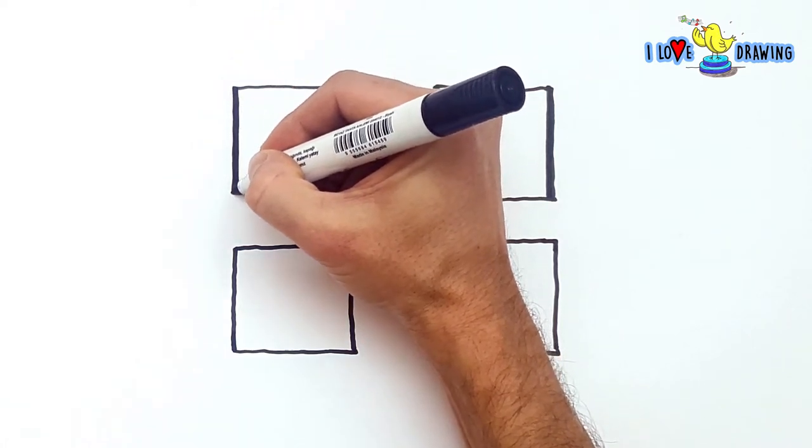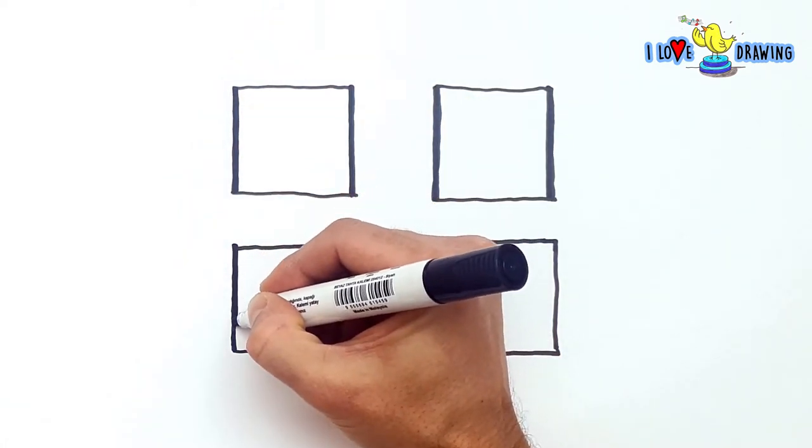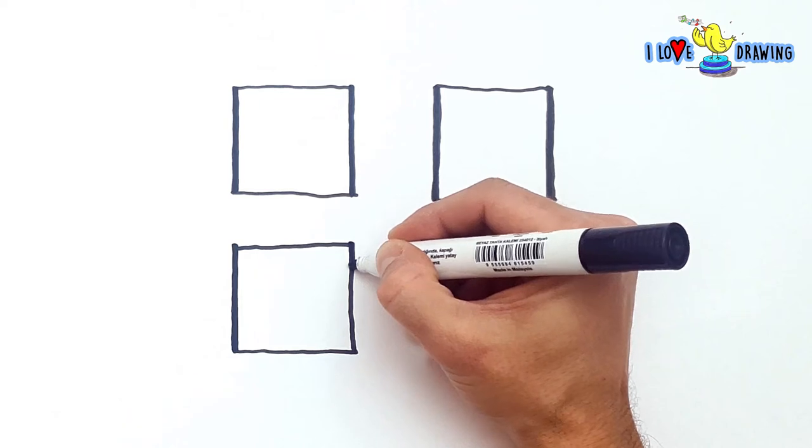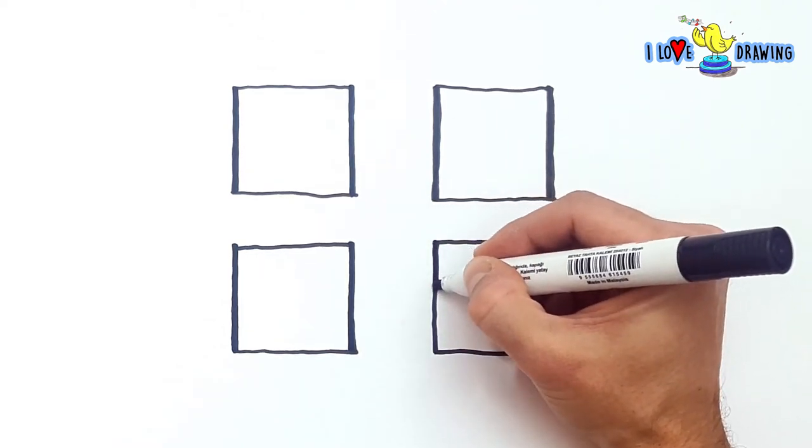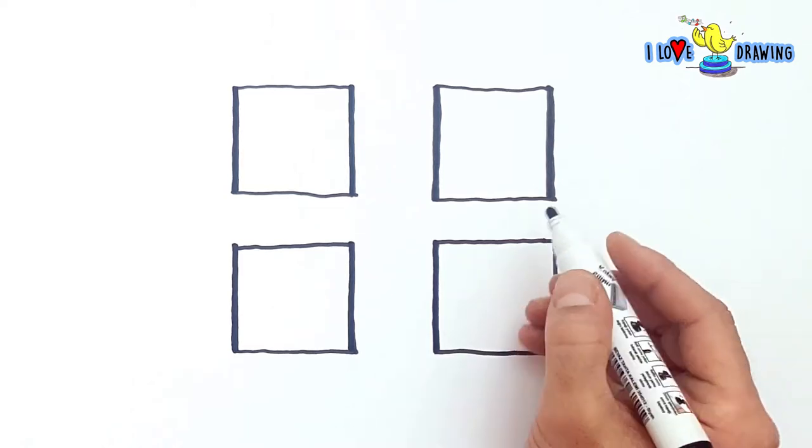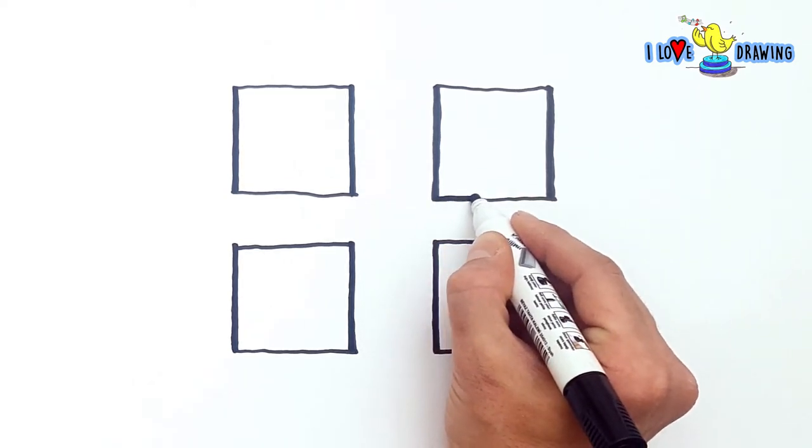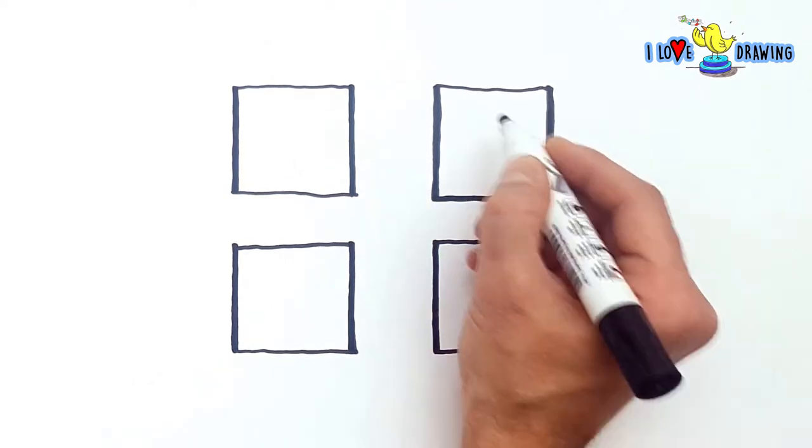So, what are expressions really and how do we draw them? Expressions are simply the feelings. When a character is feeling happy or sad or shocked, we understand that basically through their facial expressions. How do we show these expressions?